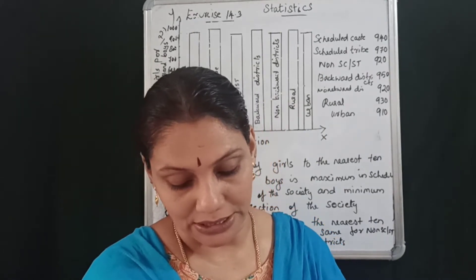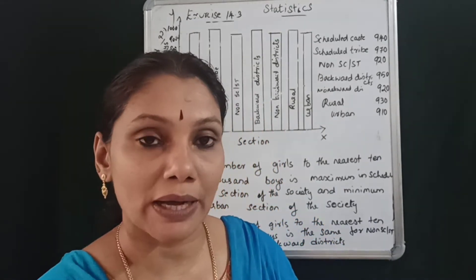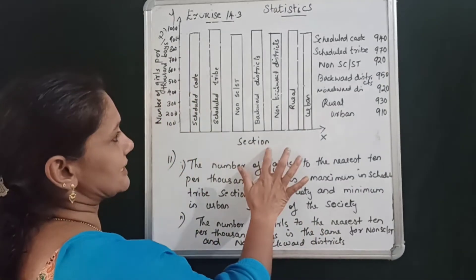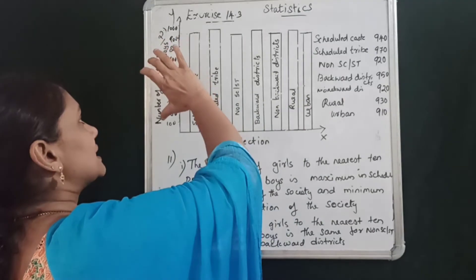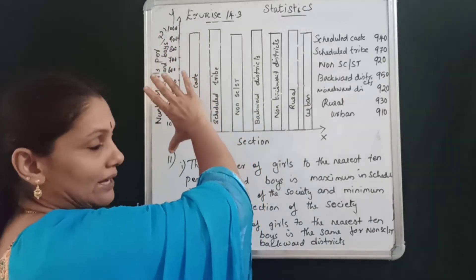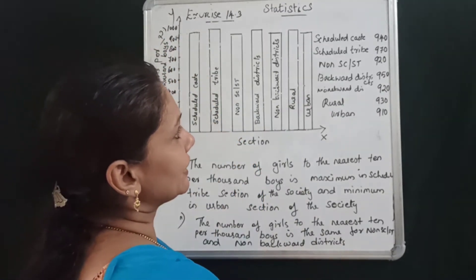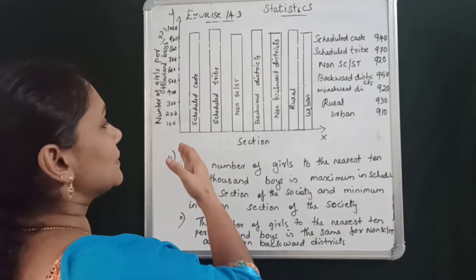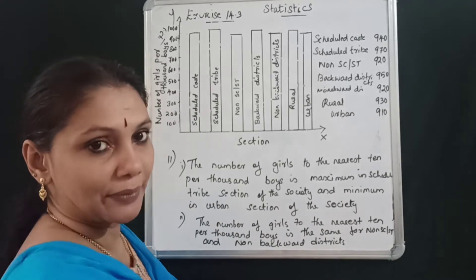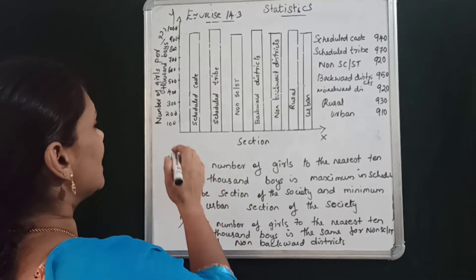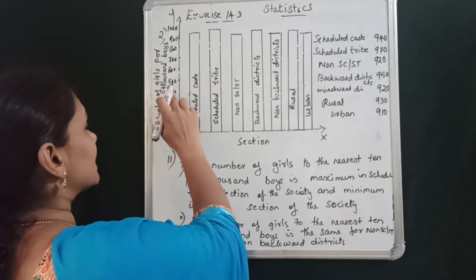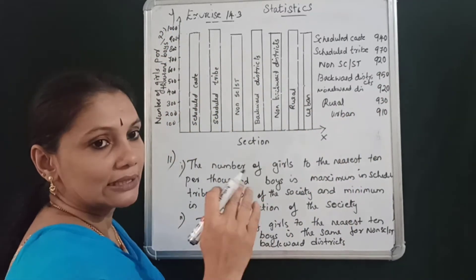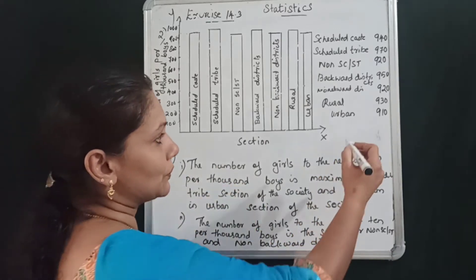Represent the information by a bar graph. In the bar graph, we have sections on one axis and number of girls per thousand boys on the other axis. The y-axis goes up to 970. There are certain limitations to consider when setting up the scale.